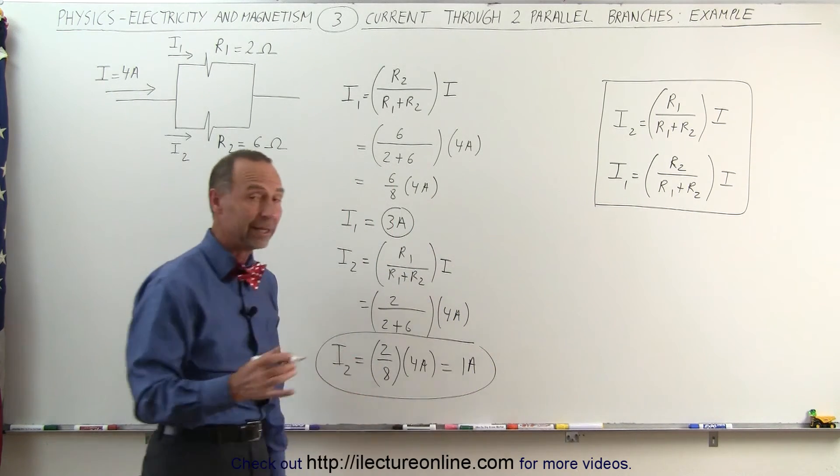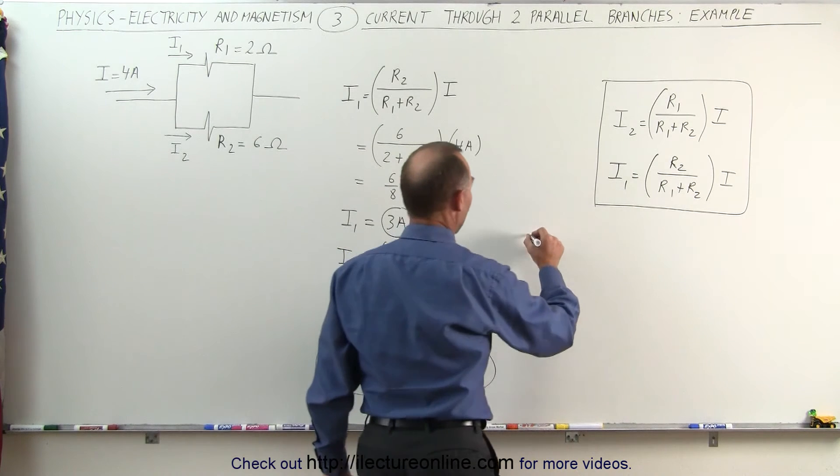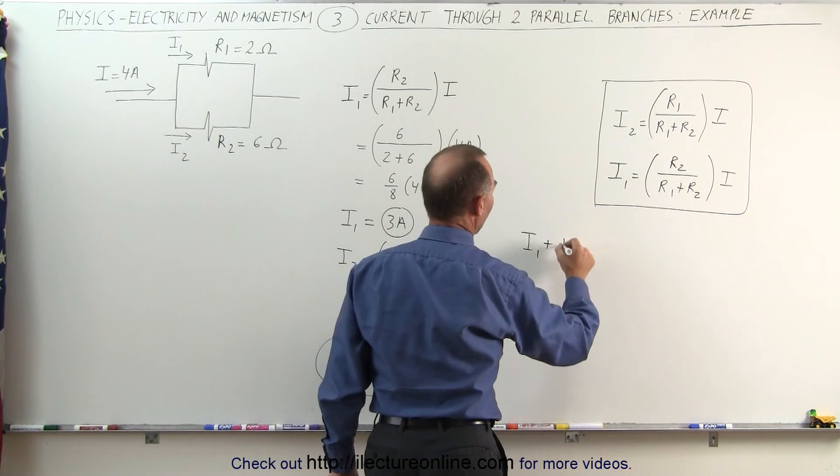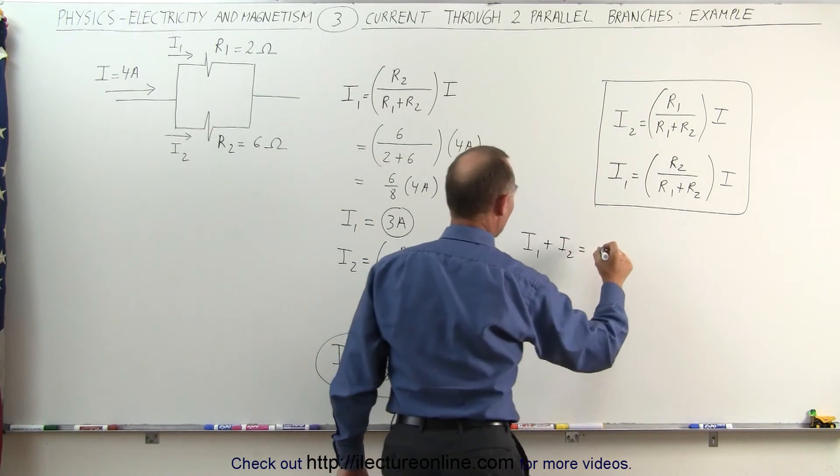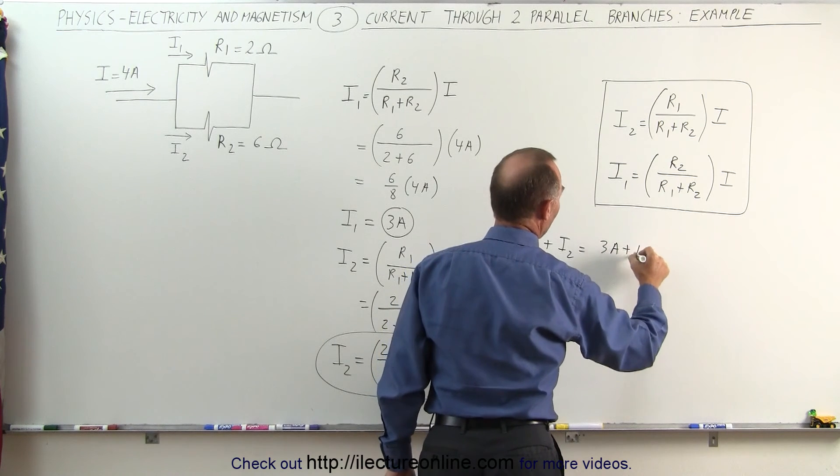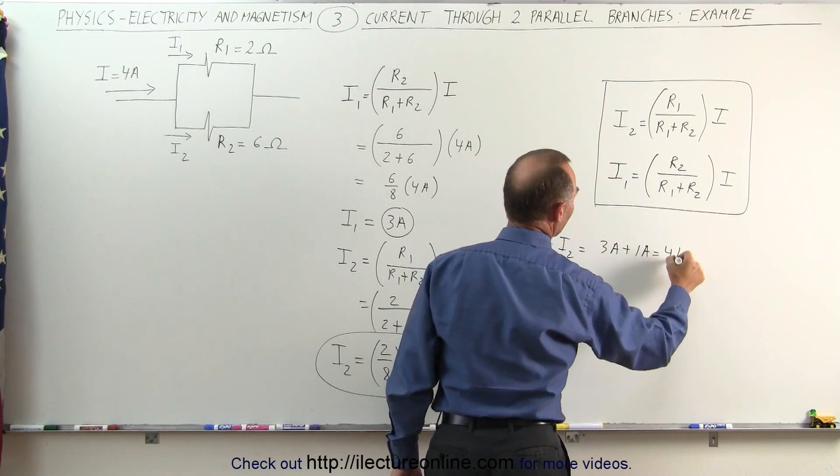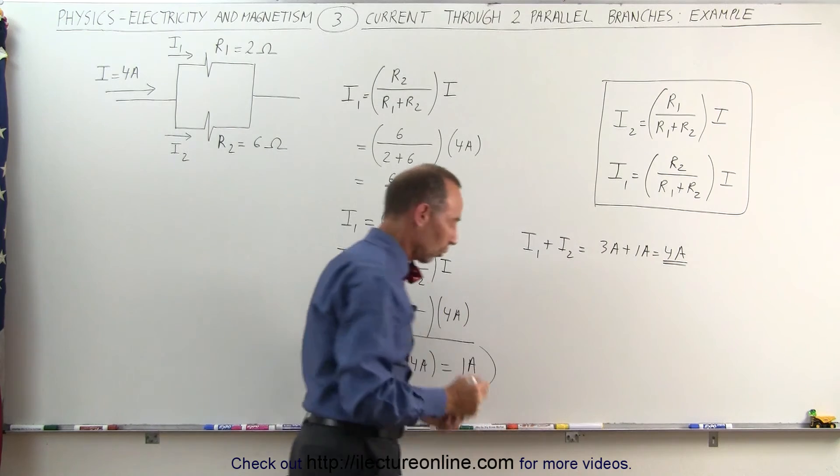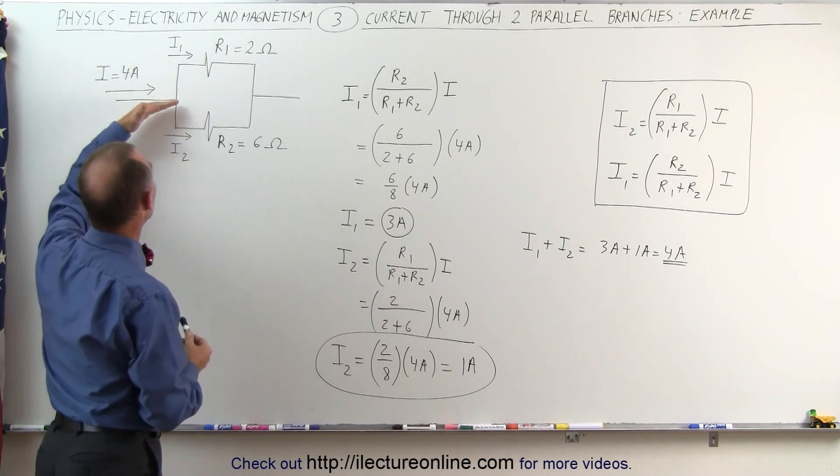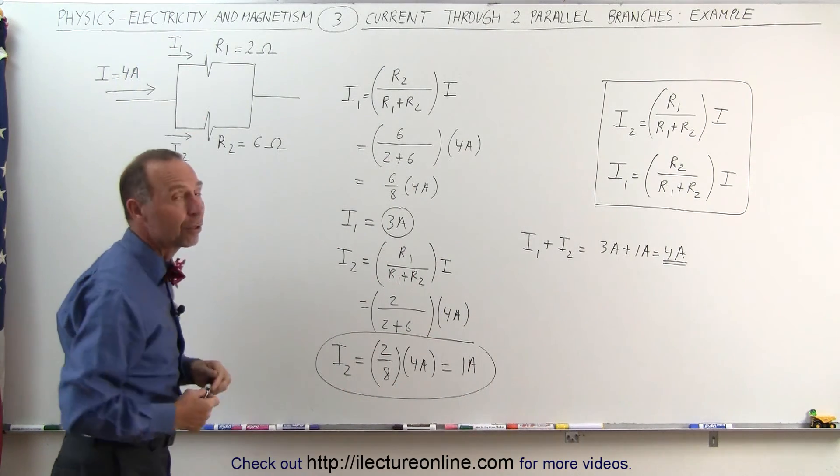Now to check if we did this correctly, let's add them together. I1 plus I2 equals 3 amps plus 1 amp equals 4 amps. And 4 amps is the total current flowing into the branch point, which means we did everything correctly.